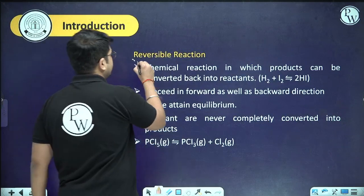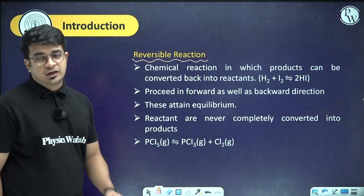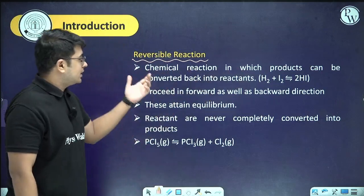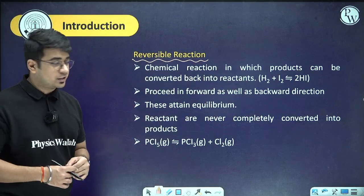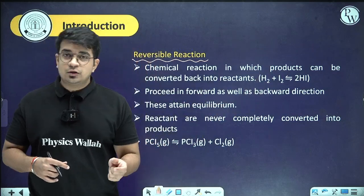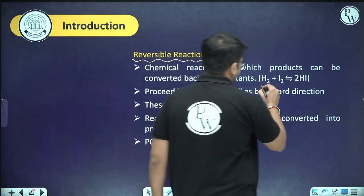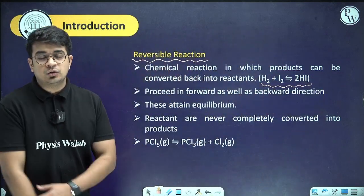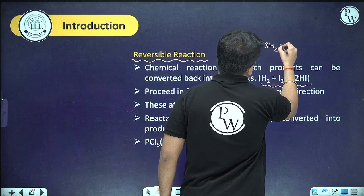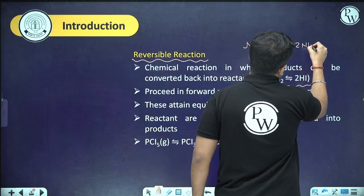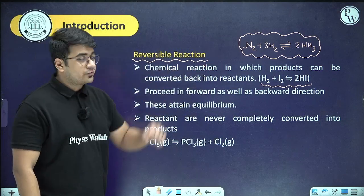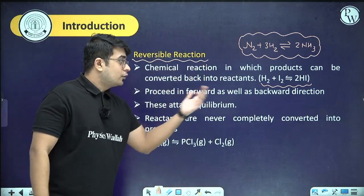Equilibrium always takes place for reversible type reactions. A chemical reaction in which products can be converted back into reactants is a reversible reaction. For example: H₂ + I₂ ⇌ 2HI — immediately after HI forms, it converts back into H₂ and I₂. Another example: N₂ + 3H₂ ⇌ 2NH₃, which is Haber's process for manufacturing ammonia — also a reversible reaction that proceeds in forward as well as backward directions.